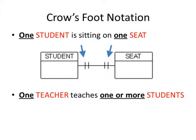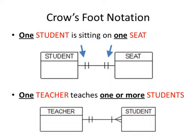The next representation in Crow's Foot Notation is the one-to-more relationship. In this example, we have the Teacher table and the Student table. One teacher, represented by the two vertical lines, can be related to one or more students, where the 'more' is represented by the triangle symbol.